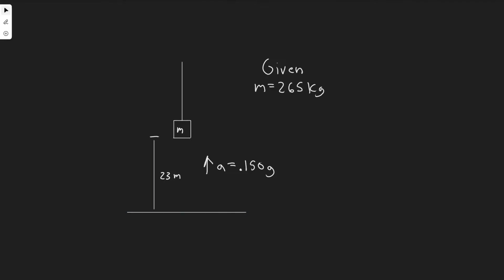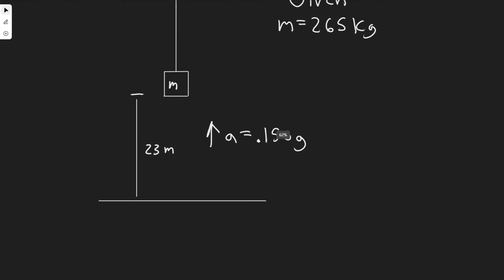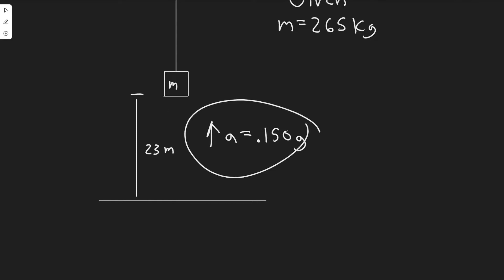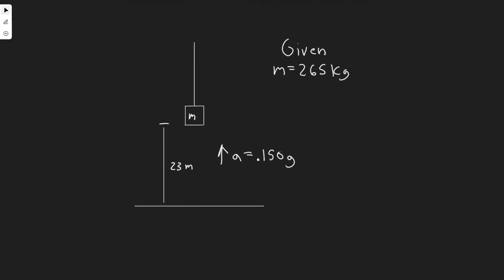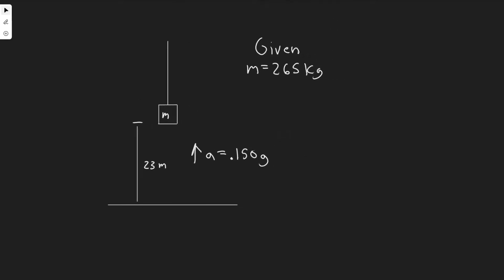So first let's understand what we have going on here. We have this load, which is basically a box, and we know it's 265 kg, and it's going to be lifted 23 meters with an acceleration of 0.150 G. We're going to be calculating a bunch of things, so let's get started. Starting with A — what they're asking us to find is the tension in the cable.